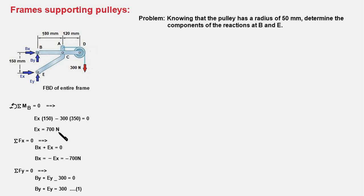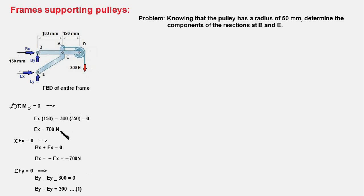Next, we write the force summation equation in the x direction: BX plus EX equals zero. Since we know EX, we find BX equals minus 700 newtons. Then we write the force balance in the y direction: BY plus EY minus 300 equals zero. This has two unknowns, so we cannot solve it yet. From this exercise we have obtained only EX and BX.